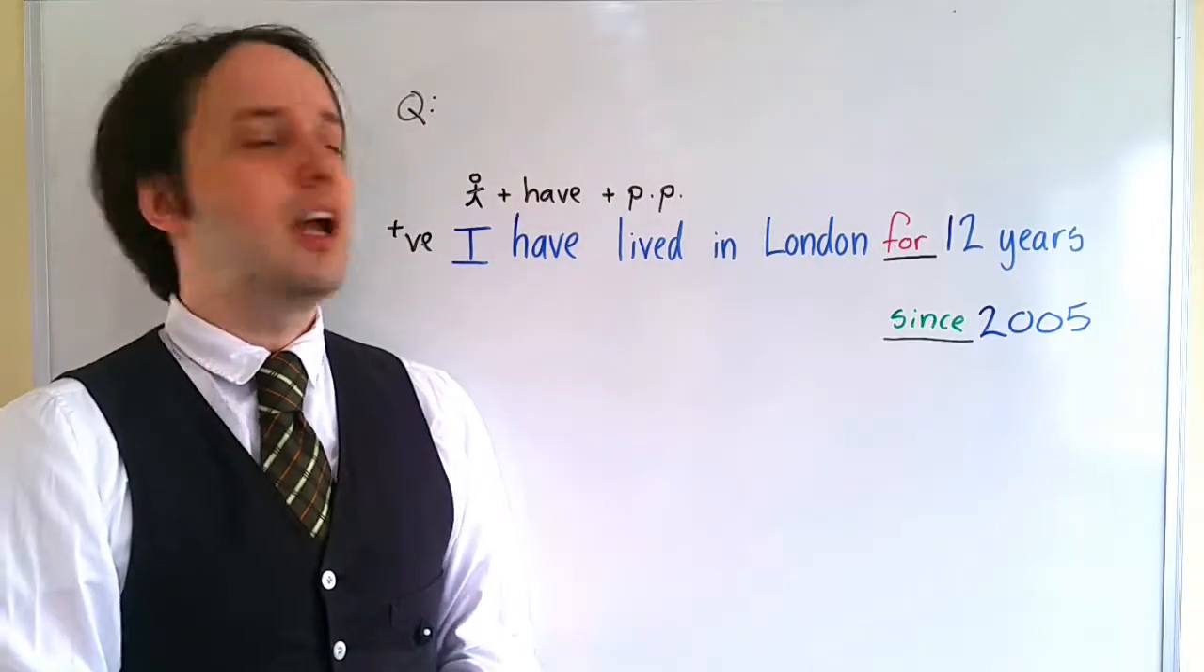So that's it, that's perfect. How can we make this into a question? We remember from the previous two videos, we take the subject and the auxiliary verb and change them. So I have becomes have you lived in London for 12 years? Have you lived in London since 2005? These questions are grammatically perfect.